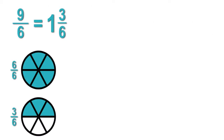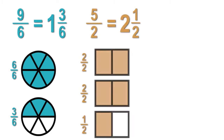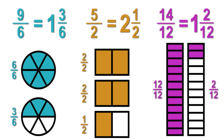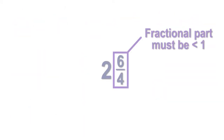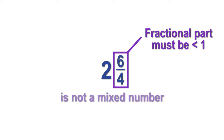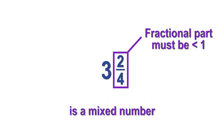The fraction nine sixths can be written as the mixed number one and three sixths. Five halves can be written as the mixed number two and one half. And fourteen twelfths can be written as the mixed number one and two twelfths. The fractional part of a mixed number must be less than one, so two and six fourths would not be considered a mixed number because the fractional part is not less than one. The mixed number would be three and two fourths.